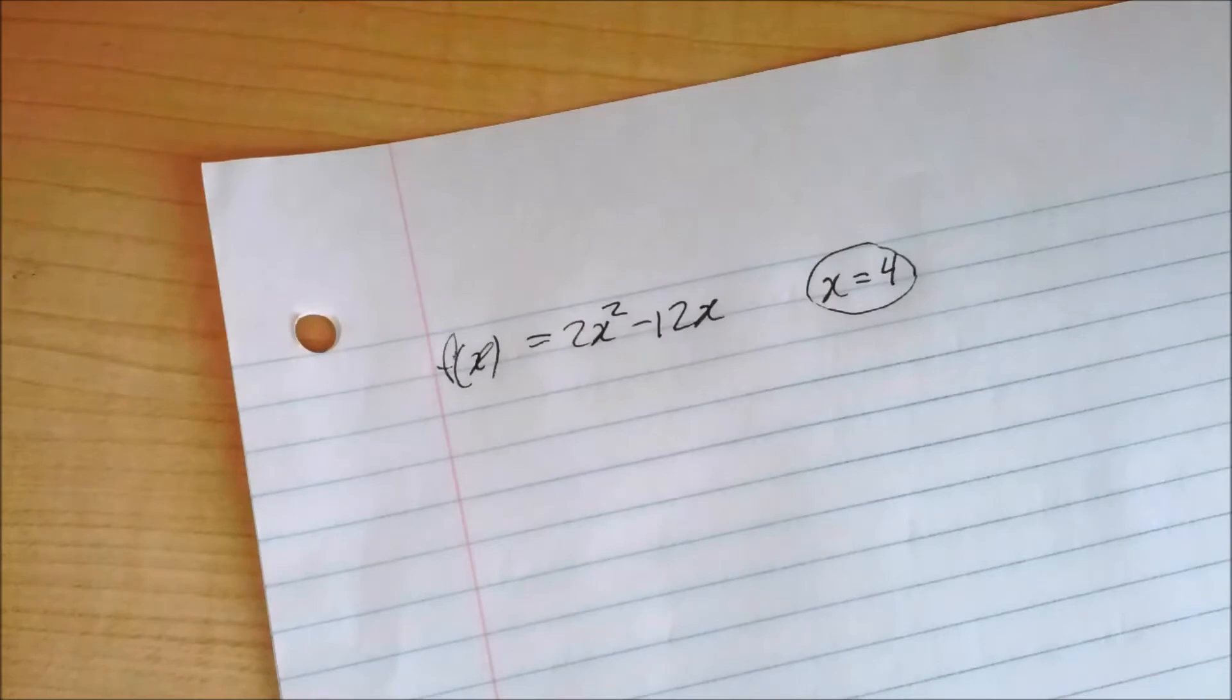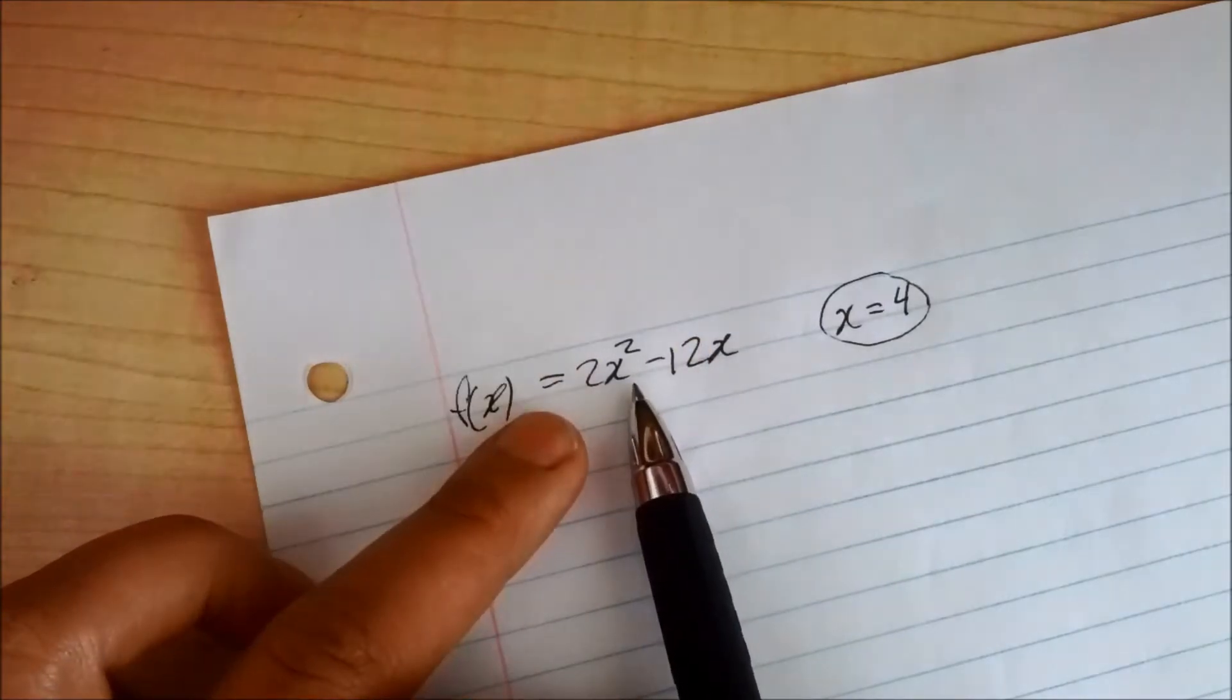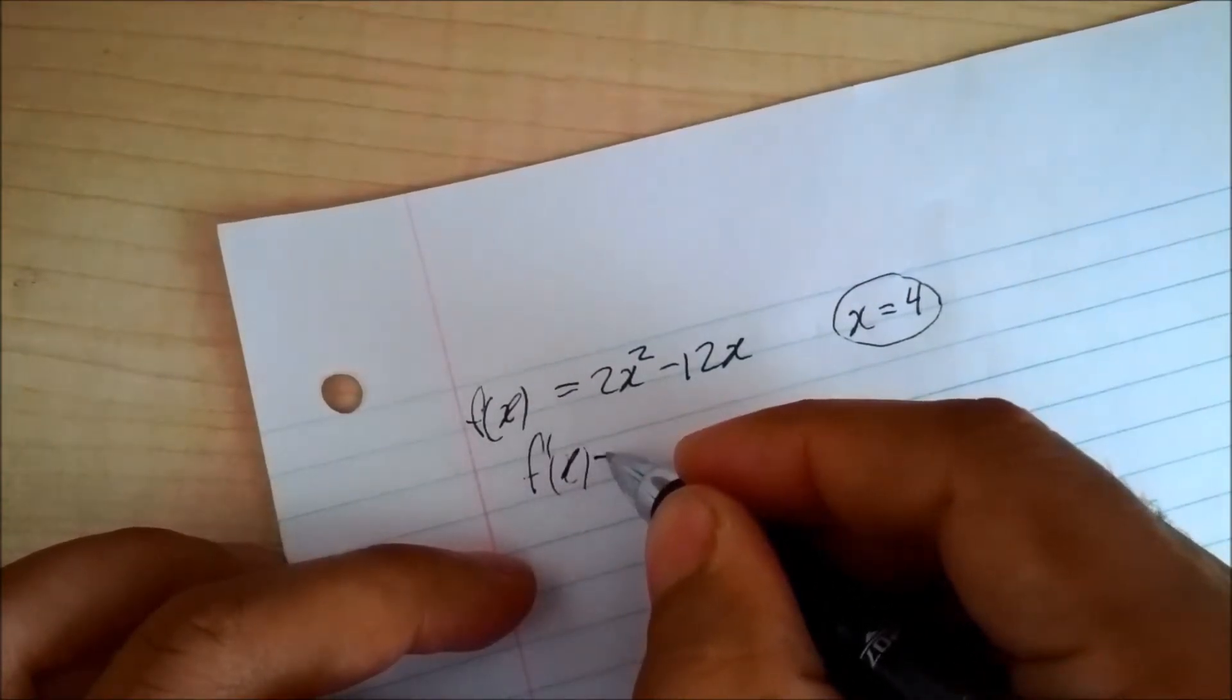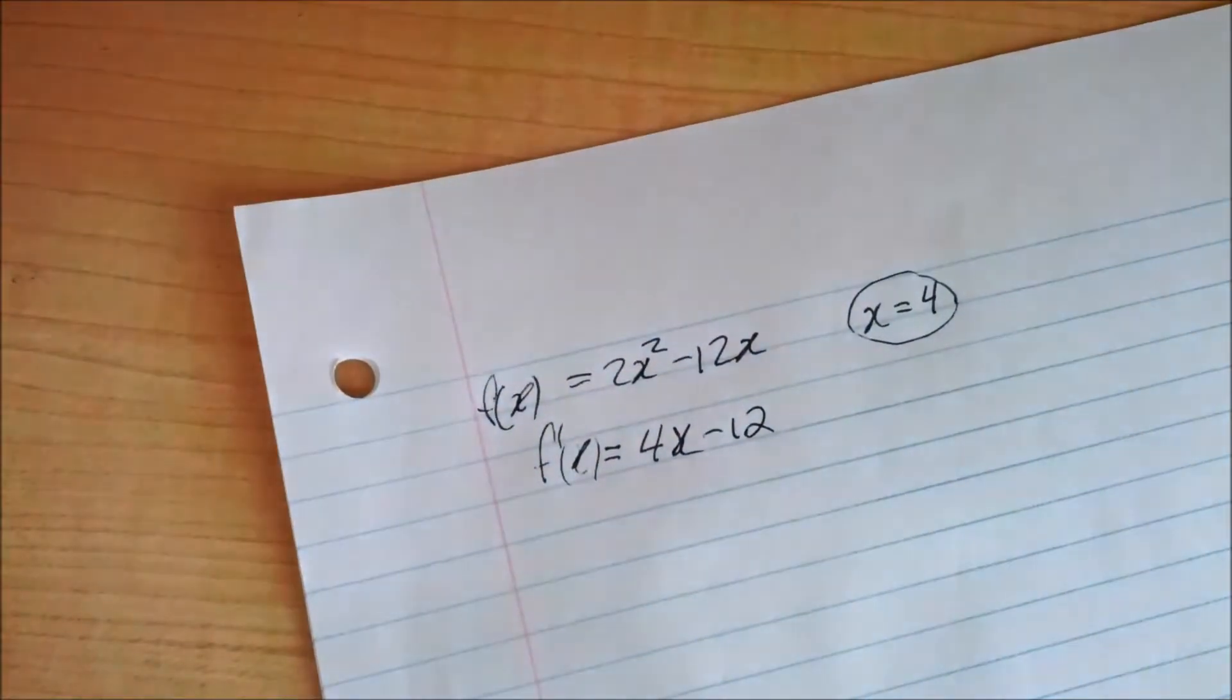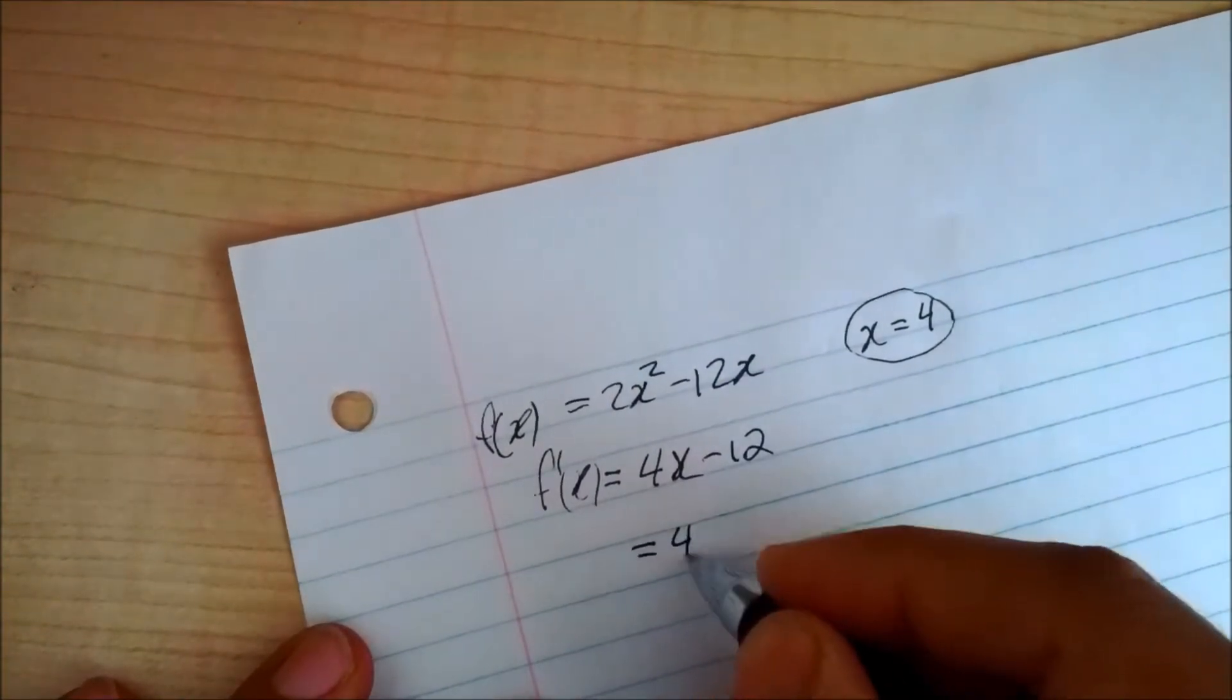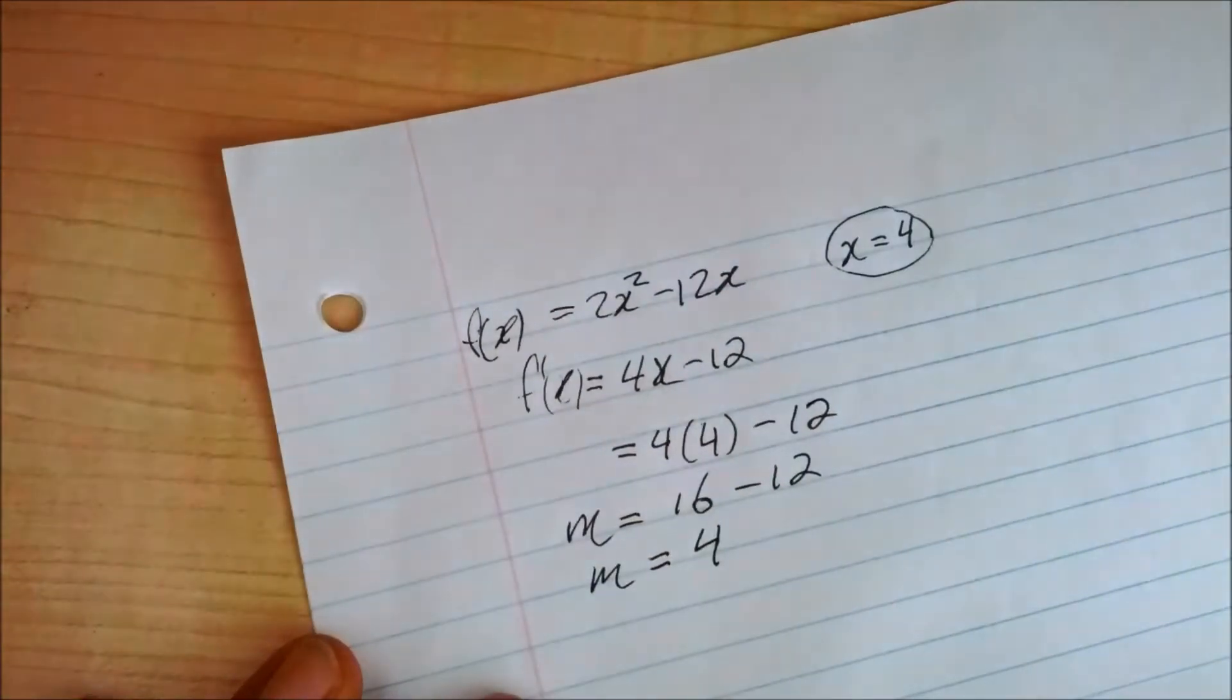So to find the equation tangent to the curve at x equals 4, what we do is simply take the derivative of this function and plug in the x value. So f prime of x equals 4x negative 12. We simply plug that 4 into the x here to find the slope. So there's our slope right there.